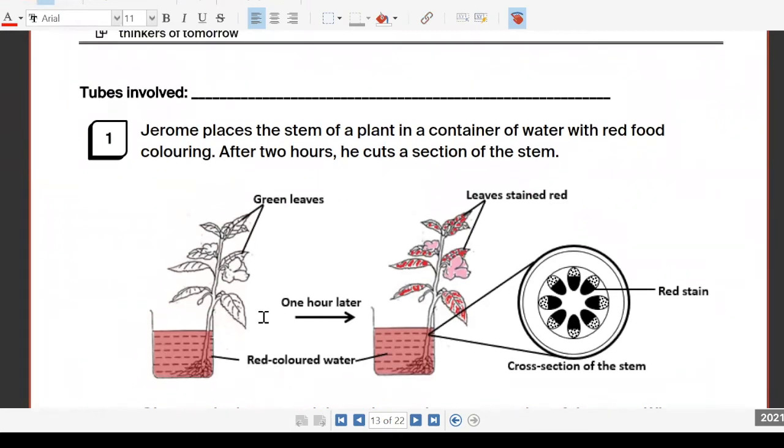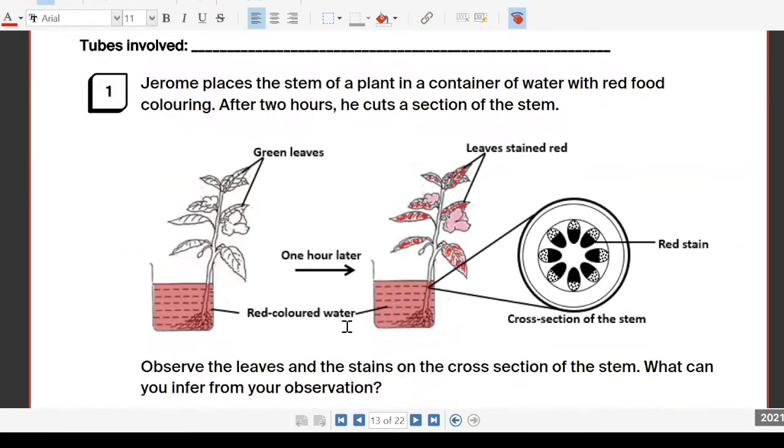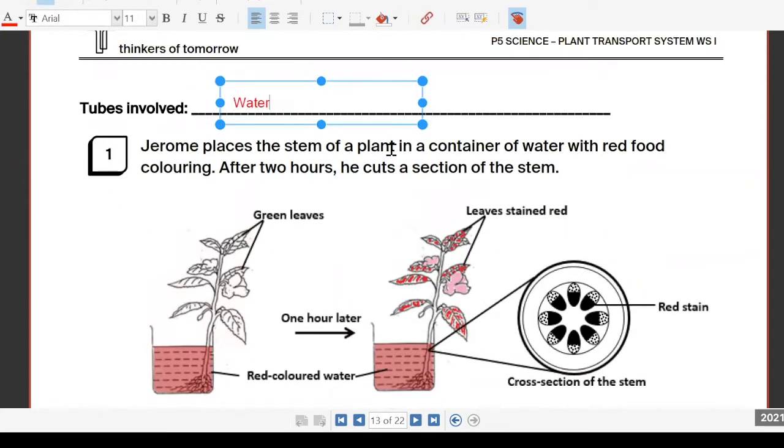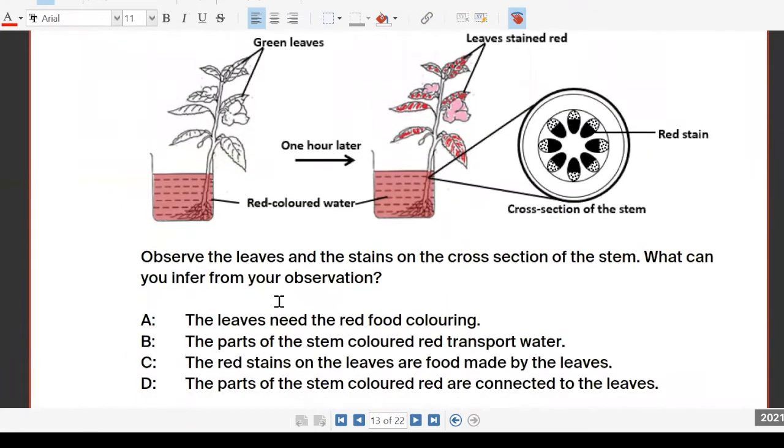For question one, this is going to do with water and everything absorbing the red colored water. Your tubes involved will be water carrying tubes. They said that they actually observe the stains on the cross-section of the stem. What can you infer from this observation? The observation is what can you see.